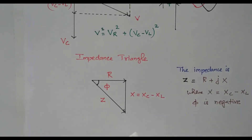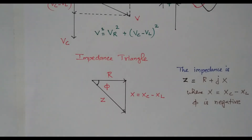So now we have discussed the RLC series circuit. Three cases are available: Case 1 — Xl equals Xc, both inductive and capacitive reactances are equal. Case 2 — capacitive reactance is lesser and inductive reactance is more, acting as an RL circuit. Case 3 — capacitive reactance is more and inductive reactance is less, acting as an RC circuit. We analyzed the phasor diagram, waveform, and impedance triangle for all three cases. Thank you.